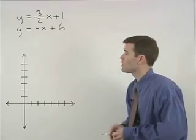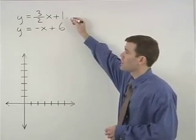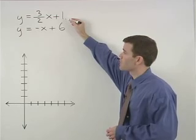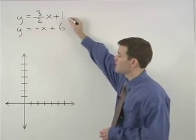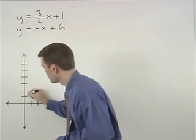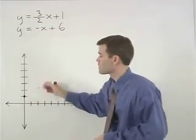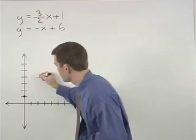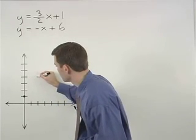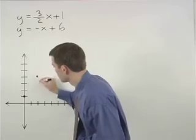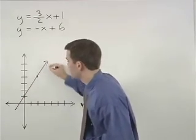So let's start by graphing the line y equals 3 halves x plus 1. It has a y intercept of 1 and its slope is 3 halves. So we go up 3 and over 2 and we have our first line.